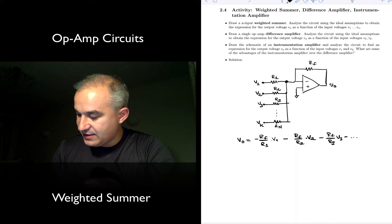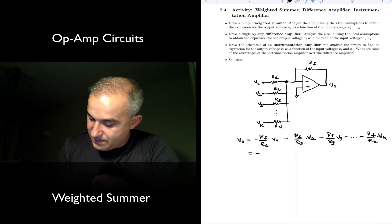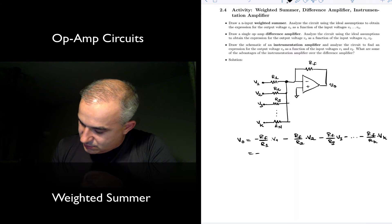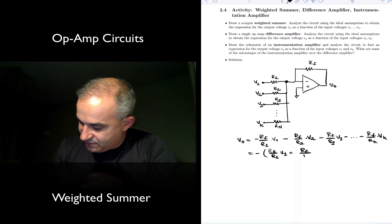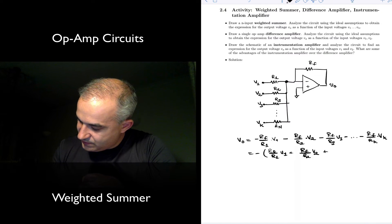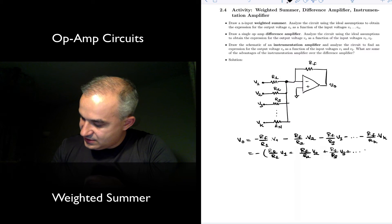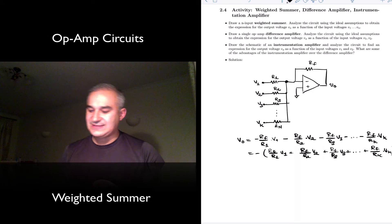And just keep going minus RF over RK times VK, or minus times the quantity RF over R1 times V1 plus RF over R2 times V2 plus RF over R3 times V3 plus dot dot dot RF over RK times VK. And so that's applying superposition.